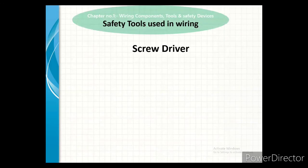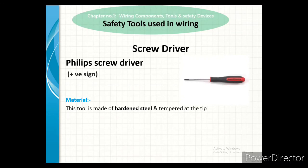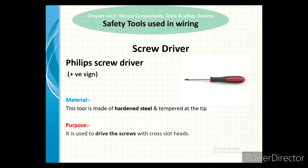Our next screwdriver is the Phillips screwdriver, which is shaped like a mathematical positive sign. The material is the same — hardened steel, tempered at the tip. Its purpose is to drive screws with a cross slot head. The remaining parts will be covered in the next session.